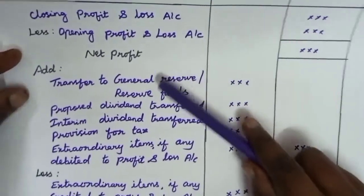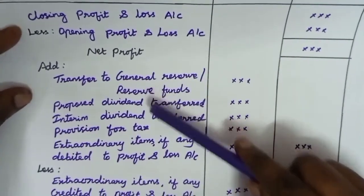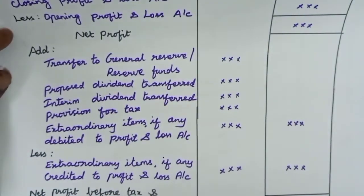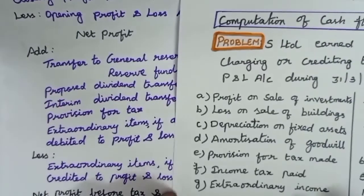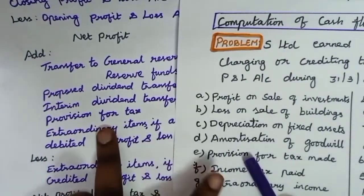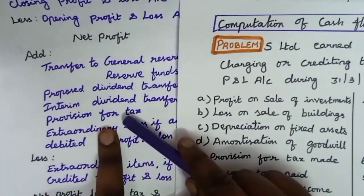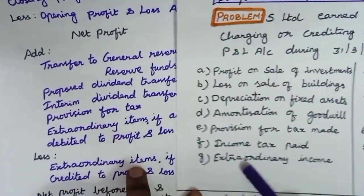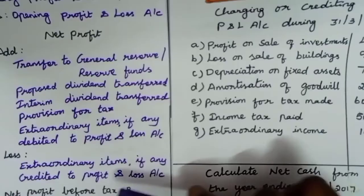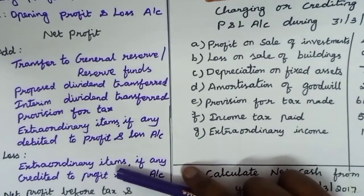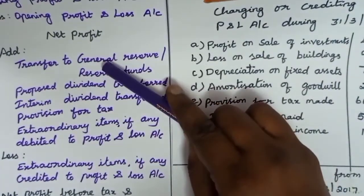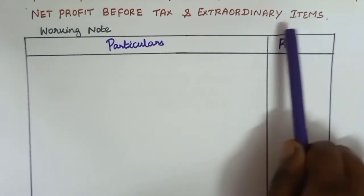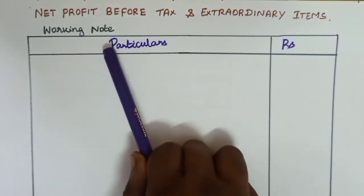We have to make some adjustments to the net profit to determine net profit before tax and extraordinary items. Here we have the format: with the net profit we have to add certain items and subtract certain items. In this problem we have provision for tax — provision for tax we have to add with the net profit. Next, we are also having extraordinary income — extraordinary income we have to deduct from the net profit. We have to determine net profit before tax and extraordinary items separately under the heading working notes.